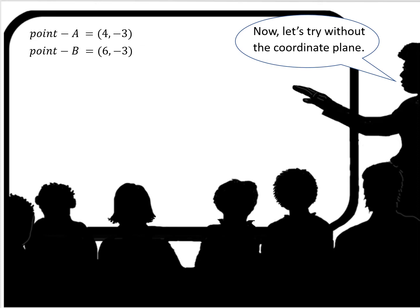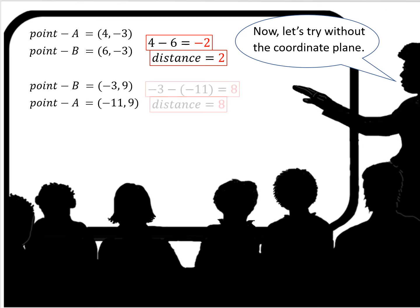Now let's try without the coordinate plane. We're given two points A and B, where A, the coordinates are 4, negative 3, and B is 6, negative 3. So 4 minus 6 equals negative 2. The distance is the absolute value, which is 2.